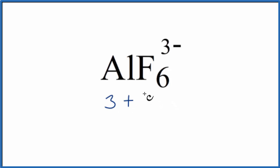Fluorine is in group 17, sometimes called 7A, that'll have seven, but we have six fluorine atoms. And then this 3- means we have three additional electrons, so we're going to add three more. That'll give us a total of 48 valence electrons for the AlF6 3- Lewis structure.